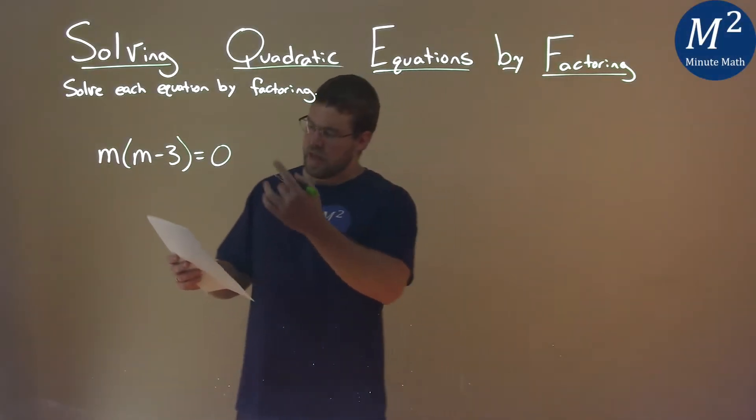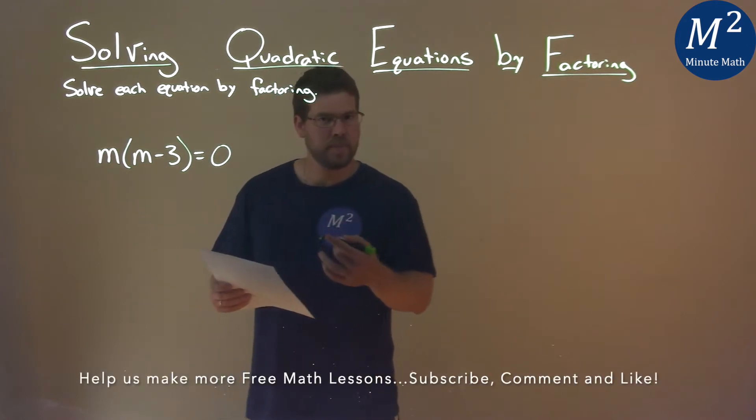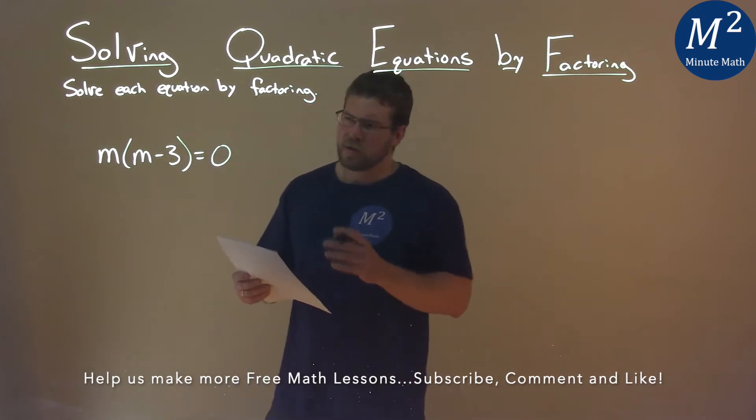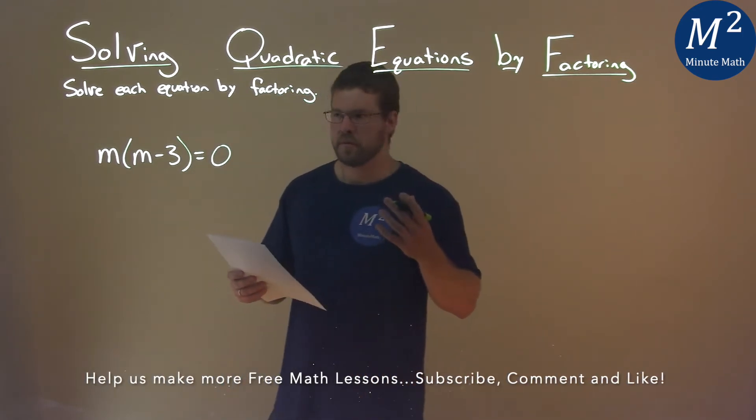We're given this problem right here, m times m minus 3, and it's equal to 0. And we need to solve this by factoring. Well, luckily it's already in factored form here.